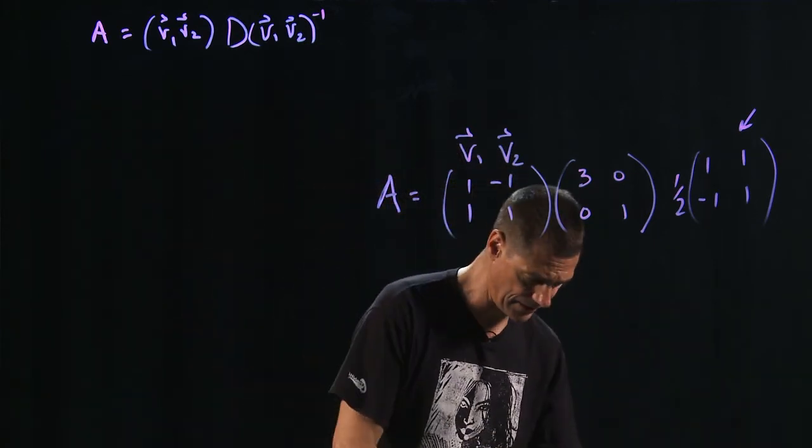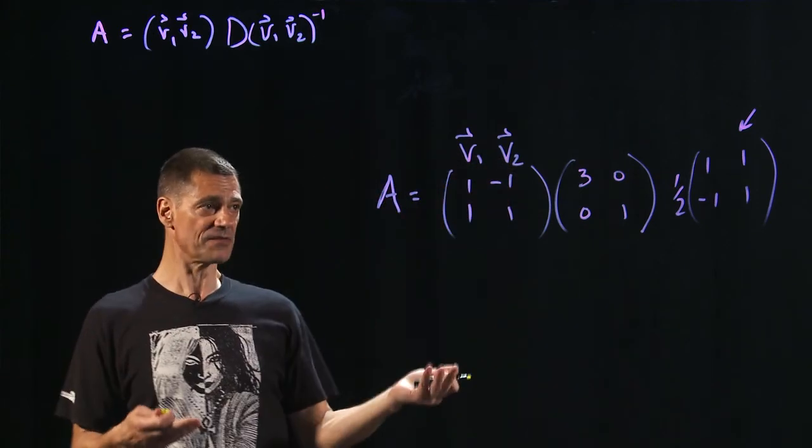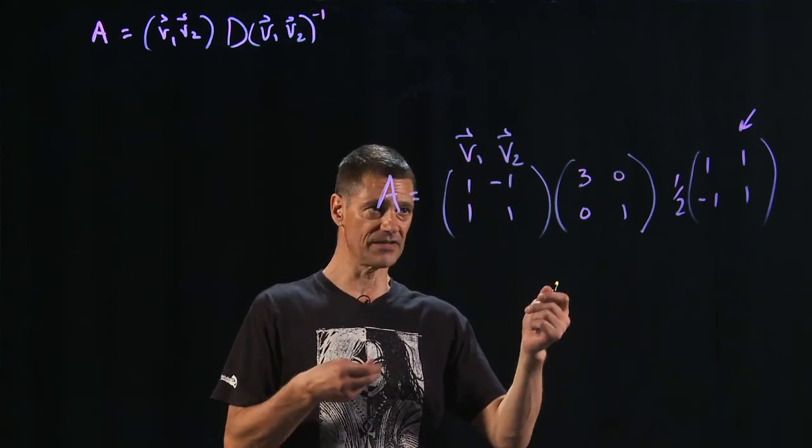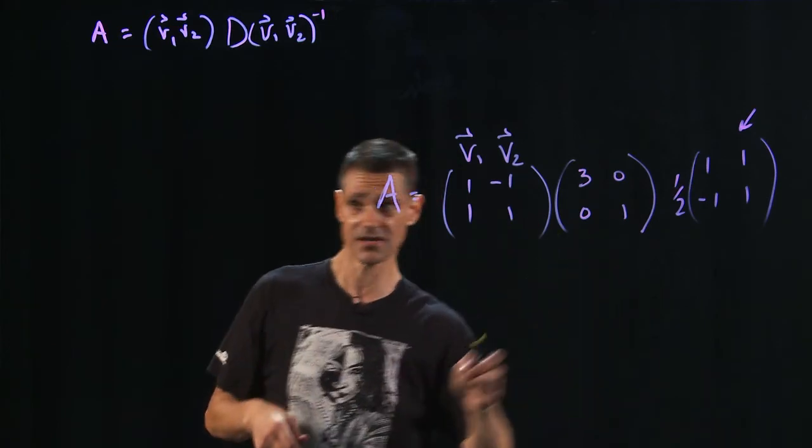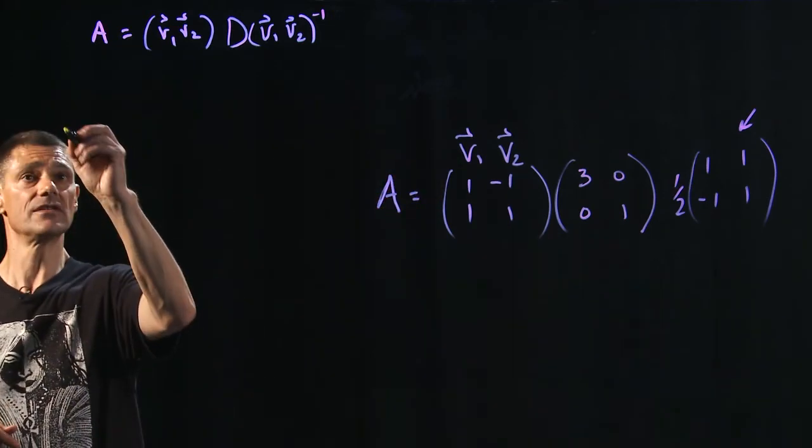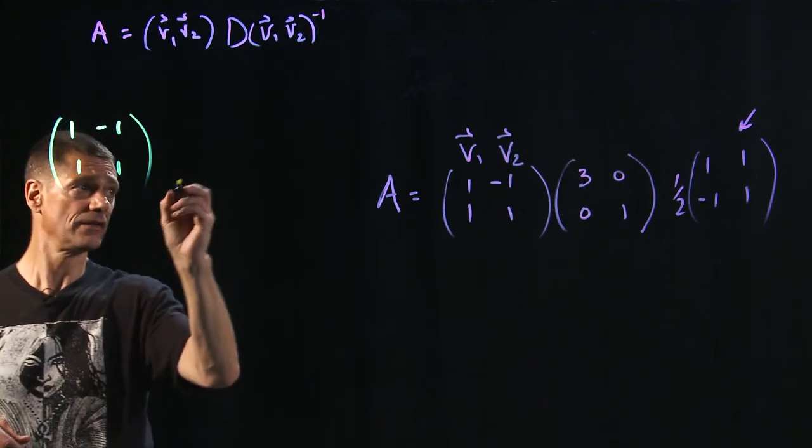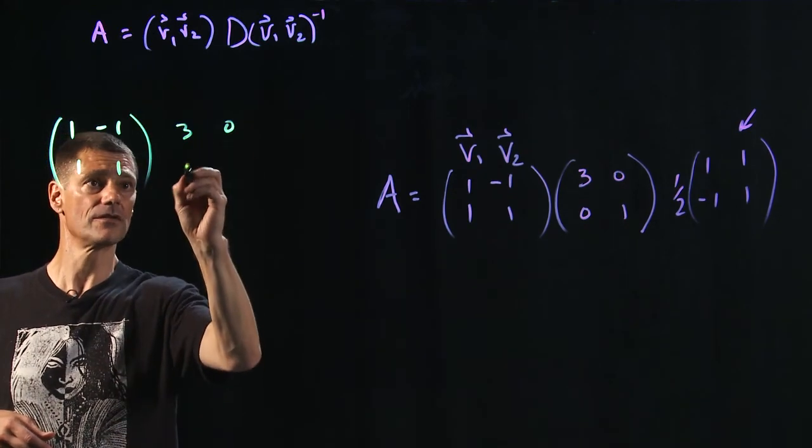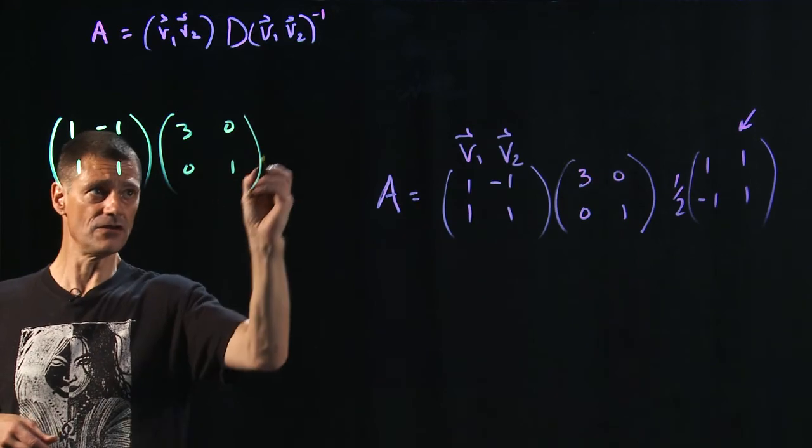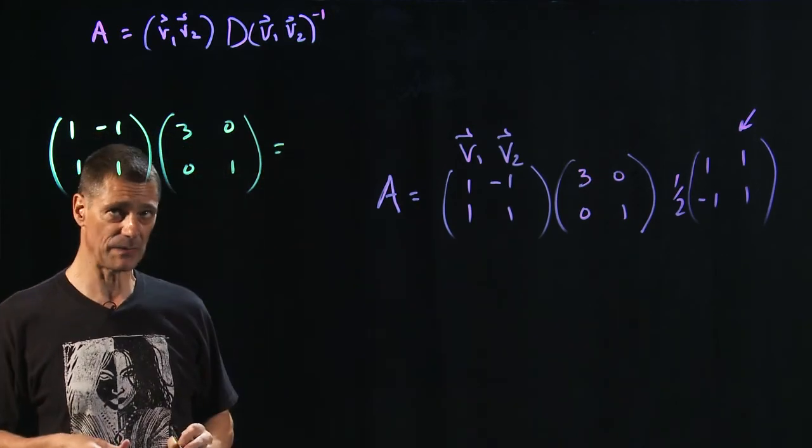Matrix multiplication, just like multiplying x times y times z, do two pieces at a time. Let's do this times this. So this is 1 minus 1, 1, 1, times 3, 0, 0, 1. This is a 2 by 2 by 2 by 2. It's going to spit out a 2 by 2.